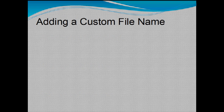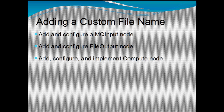To add a custom file name we're going to go over the steps. First we're going to want to add and configure our MQ input node so we can put a message into our queue. We're going to add and configure a file output node so that our message is output to a file with a file name that we're going to set using local environment. We're going to add, configure, and implement a compute node so we can use some ESQL to get our file name and set it to the local environment. Then we're going to add and configure our mapping node so we can pass our message through the flow. We're going to deploy the flow and then run a flow test to make sure that's working correctly.